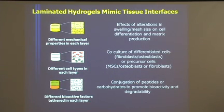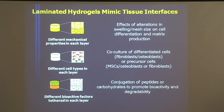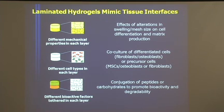Some things we could do with this system include changing the mechanical properties in the two layers to be more like ligament on one side and bone on the other, and looking at how that affects differentiation. We could also include different cell types — fibroblasts to represent ligament and osteoblasts to represent bone — and look at how their interactions affect overall matrix production and differentiation. Or we can spatially locate various matrix molecules in different areas and look at how that affects differentiation.